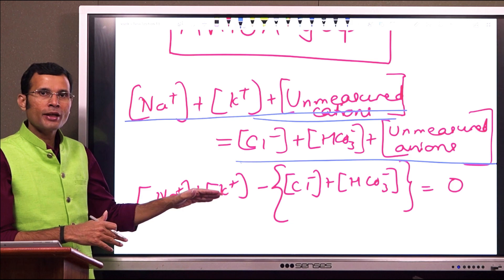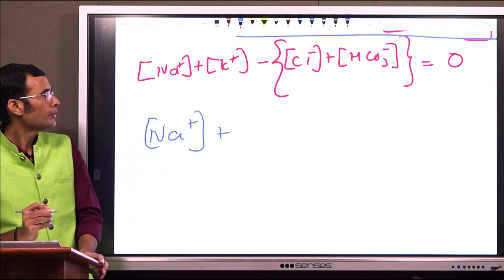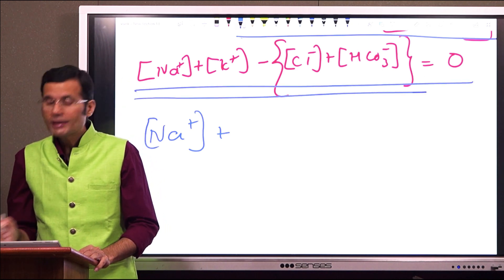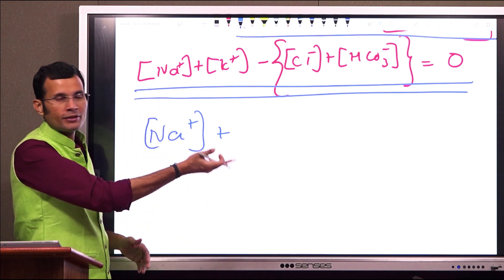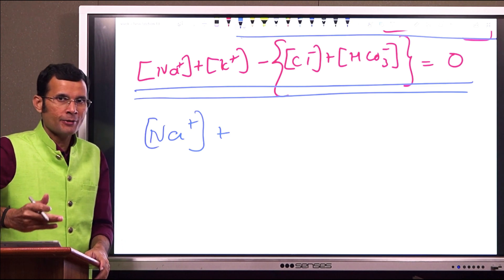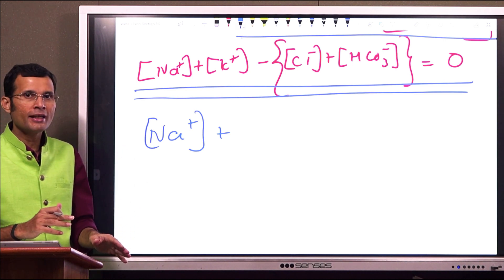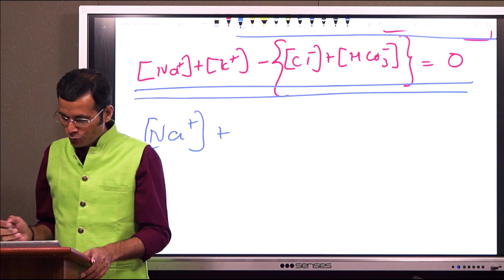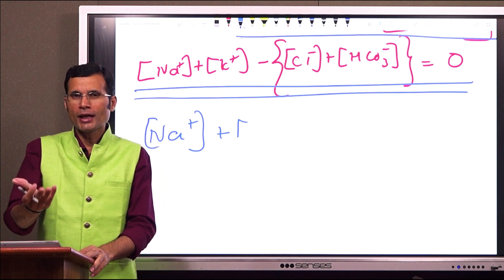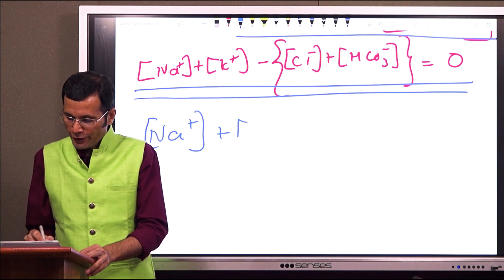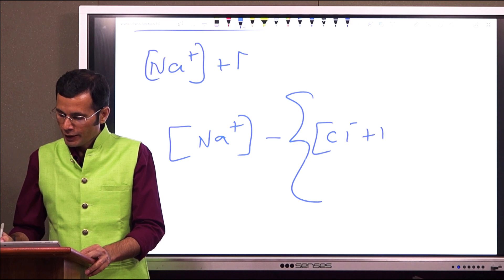Let's now calculate that gap. The number of cations and anions is actually equal, so cations minus anions should be zero. But since some anions remain unmeasured during measurement, a virtual gap exists only in our calculation. Sodium is the major cation in the serum, and potassium at about 4 mEq/L is very small, so we take sodium as the major cation and chloride and bicarbonate as the major anions.